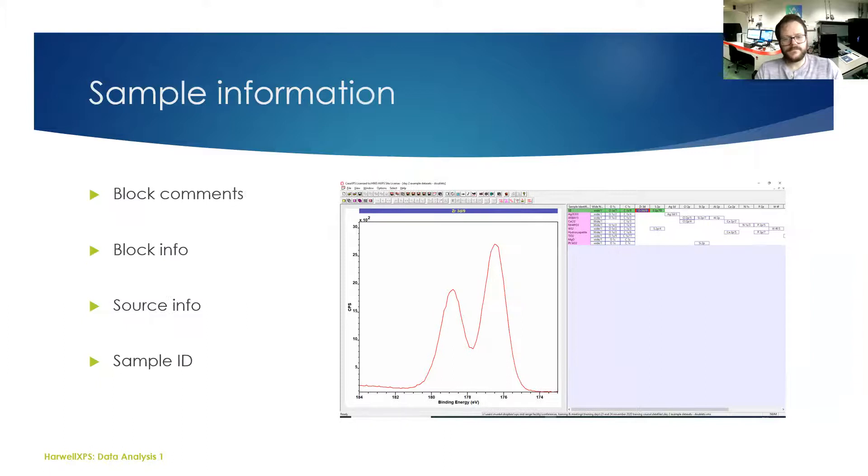Some of this information is accessible through some of those options in that bar on the top. There's four options here which bring up some of the experimental parameters which are going to be very useful if you are writing a report and you want to remember what the spot size was or what the X-ray power was. All of that information is stored in that VAMAS block.